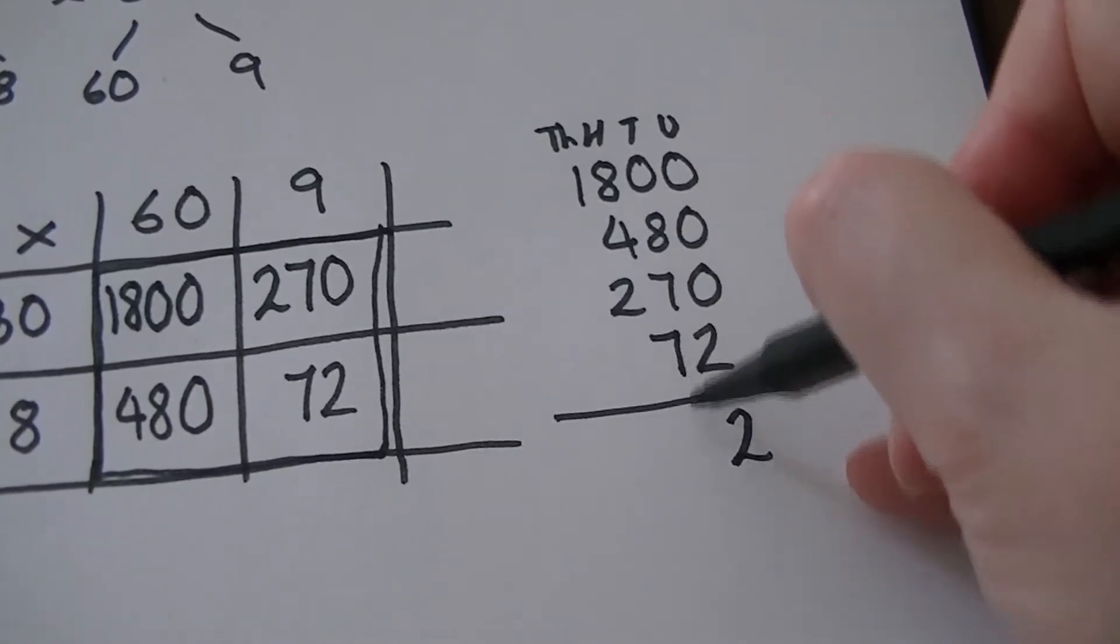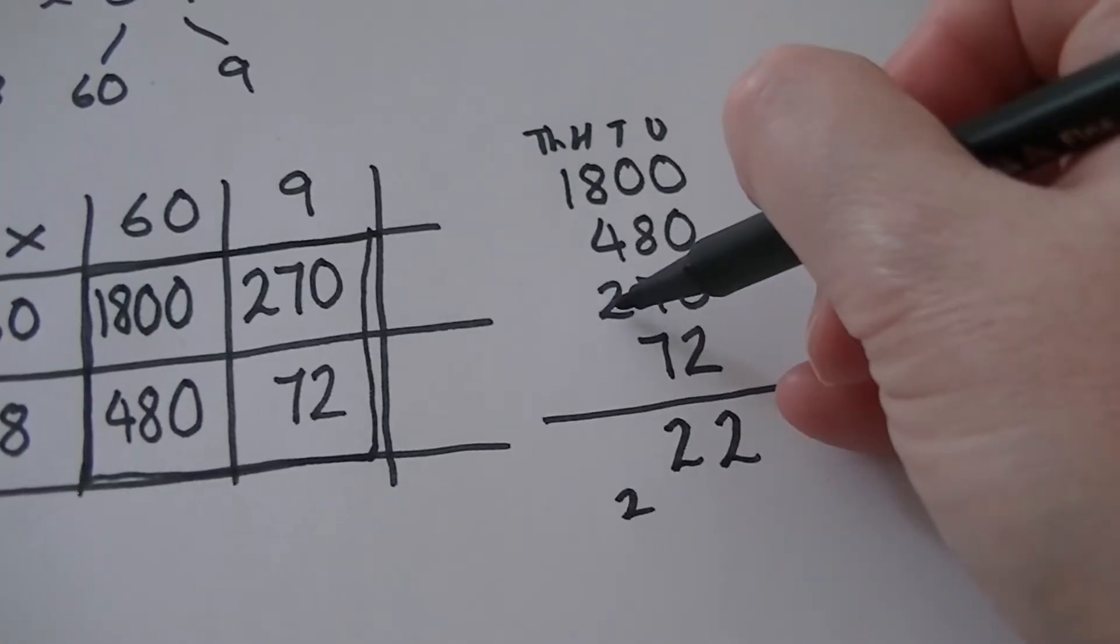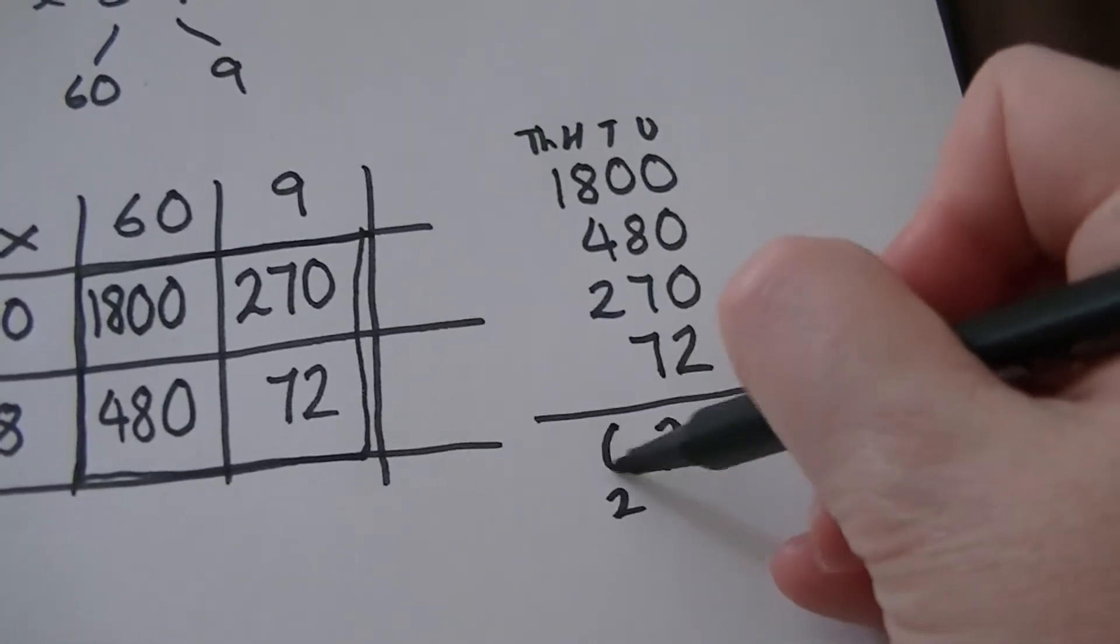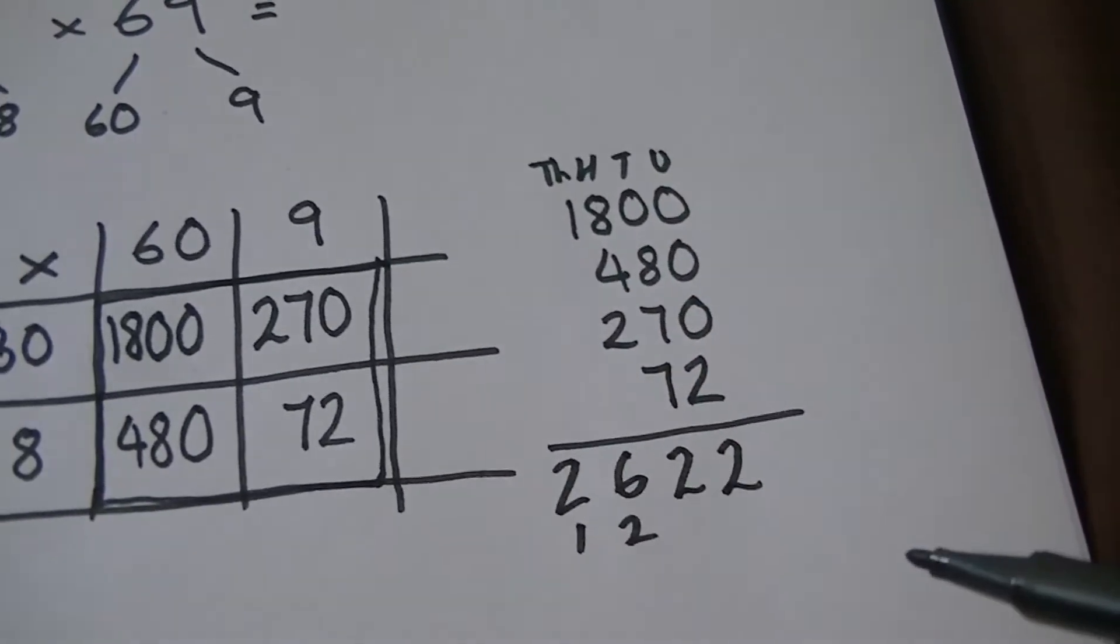8, 7, 15, 22. 8 and 2 is 10, 16. 1 and 1 is 2. 2622.